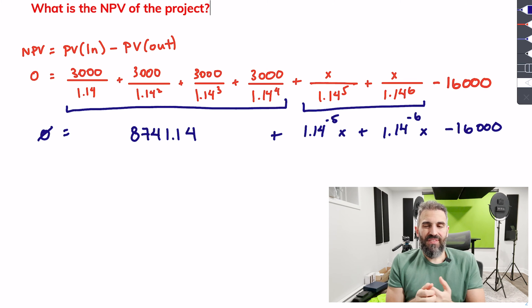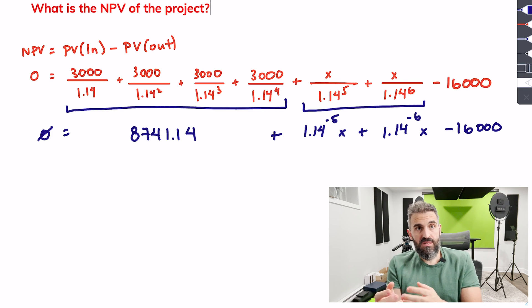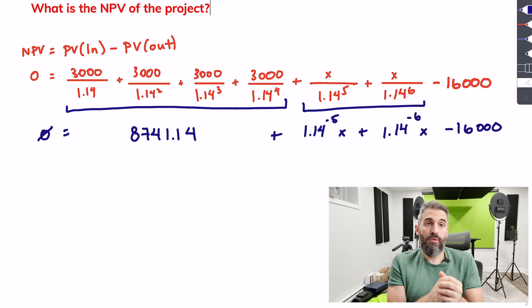Now, over here in the algebra, for those of you not that comfortable with it, what I've done is I've taken the two denominators, 1.14 to the 5, 1.14 to the 6, and I've brought them up, made their exponents negative.